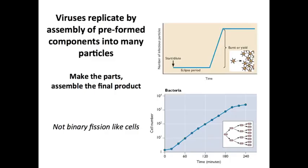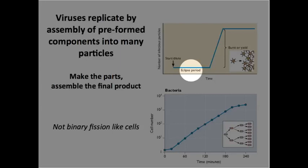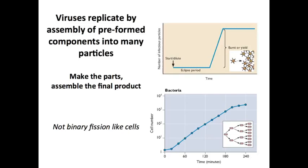Another part of the definition of viruses is that they replicate by assembly of preformed components — they do not undergo binary fission. Bacteria start as one cell, divide, and divide again — that's binary fission. Viruses don't do that. This was a puzzle for scientists for many years. When you infect a cell, there is a latent or eclipse period during which you don't see any virus particles, because the parts are being made. Only when those parts are assembled into an infectious virion do you see a burst of infectivity. This is fundamentally different from bacteria, and that's one of our fundamental definitions of virus particles.